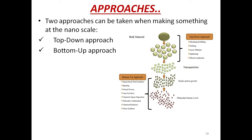Two approaches can be taken when making something at nanoscale. One is the top-down approach and another is the bottom-up approach. In the top-down approach, bulk material is synthesized or separated to form nanoparticles. In the bottom-up approach, molecules or atoms form building blocks and nuclei, and their growth is the process for preparation of nanoparticles.